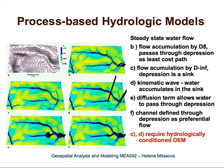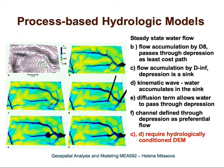Some implementations of flow accumulation treat depressions as sinks. This is an example of how water flow will look if the flow accumulation stops in the depression and it is treated as a sink — once water reaches the depression, all water essentially disappears. The water flow is cut off and then starts flowing again at the outlet of that depression. This is very unrealistic unless you have sinkholes, but it is useful for hill slope erosion modeling.